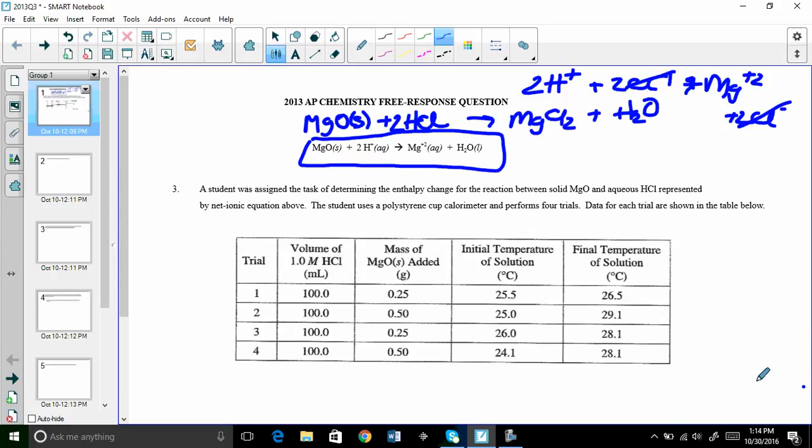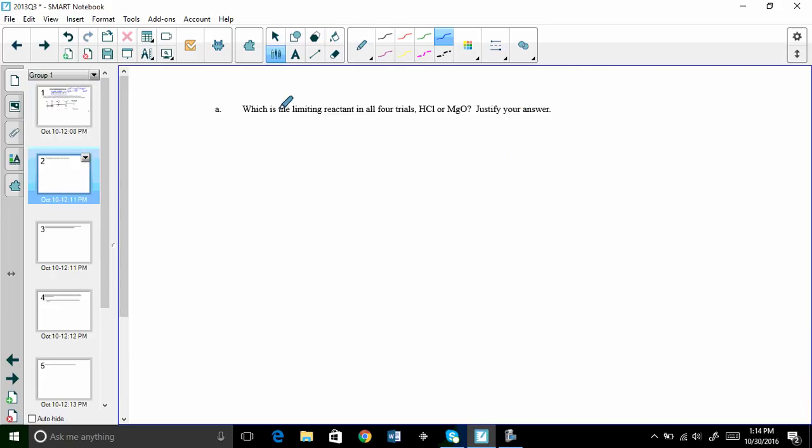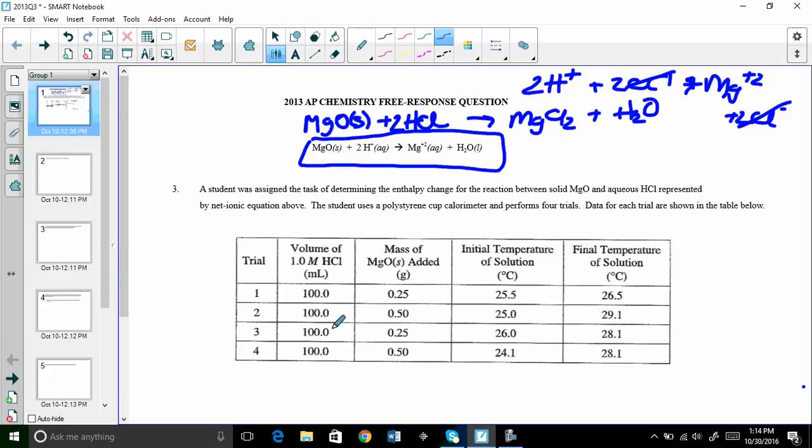So a student is assigned the task of determining the enthalpy change for the reaction between solid MgO and HCl as listed by the equation below. The student uses a polystyrene cup calorimeter and performs four trials, and the data for each trial are shown in the table. The first question is, which is the limiting reactant in all four trials, HCl or MgO? Justify your answer. The thing I think is interesting is it says all four trials have the same limiting reactant.